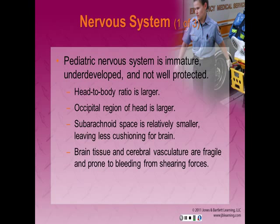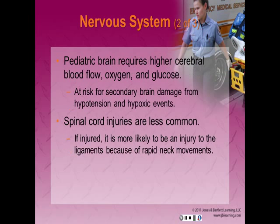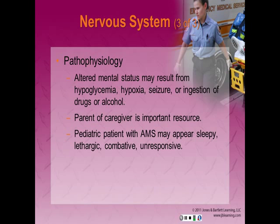The pediatric nervous system is immature, underdeveloped, and not well protected. The head-to-body ratio of an infant is disproportionately larger, making them more prone to head injuries from falls or motor vehicle crashes. The occipital region is larger, increasing head momentum during a fall. The subarachnoid space is relatively smaller, leaving less cushioning for the brain. Brain tissue and cerebral vasculature are fragile and prone to bleeding from shearing forces, such as during shaken baby syndrome. Pediatric brains require higher cerebral blood flow, oxygen, and glucose. The child's brain is at risk for secondary damage from hypotension and hypoxia. Spinal cord injuries are less common but more likely to involve ligament injury. Altered mental status may result from hypoglycemia, hypoxia, seizures, or ingestion of drugs or alcohol.